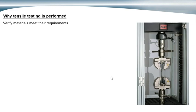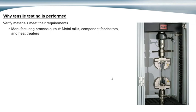One reason tensile testing is performed is to verify the materials meet the requirements. It could be to verify that the output from manufacturing processes is meeting the requirements. Steel mills, aluminum mills, and other metal producers use tensile testing to verify that the materials they're producing meet the requirements. Also, component fabricators and heat treaters will use tensile testing to verify that their processes are resulting in materials that meet their tensile property requirements.